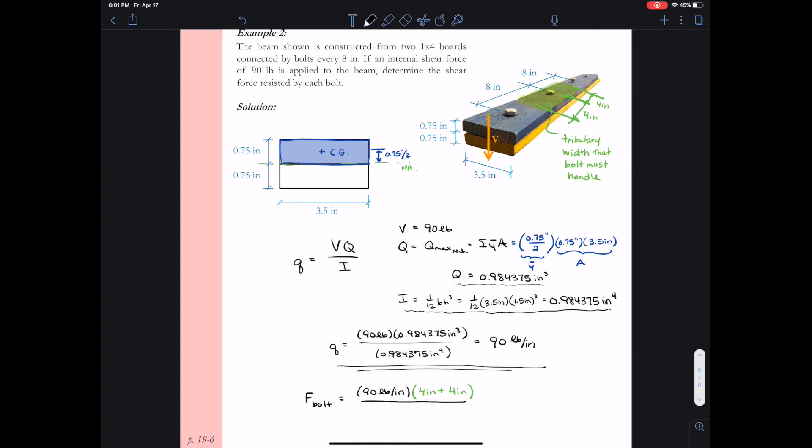And then there is only one bolt at that bolt line. So we divide by just one bolt. So this gives us that the force in this particular bolt would measure 720 pounds per bolt.